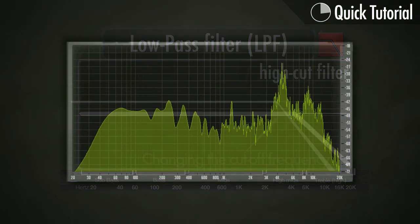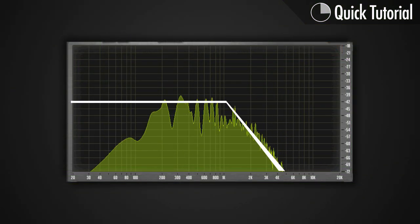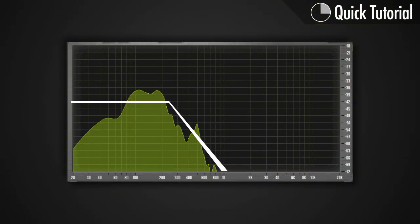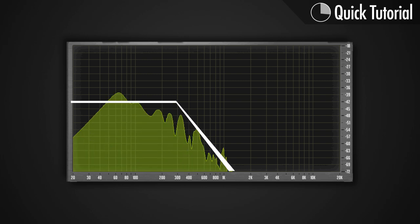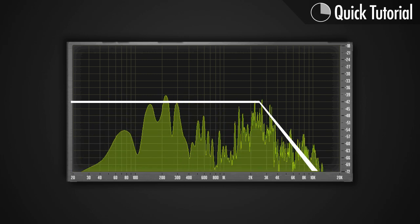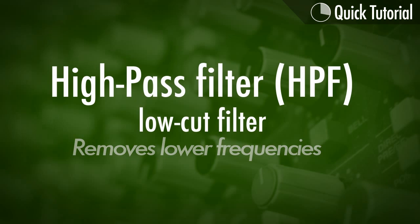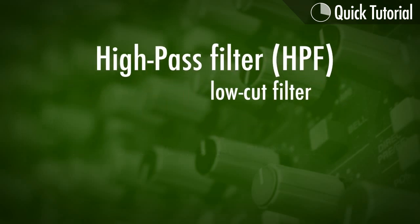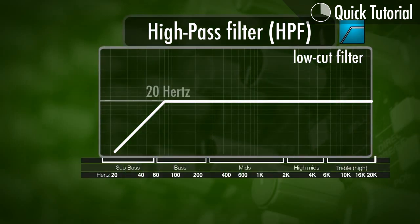This is what it sounds like. Then we have a high pass filter, and that can also be called a low cut filter because it removes the low frequencies. It sounds like so.